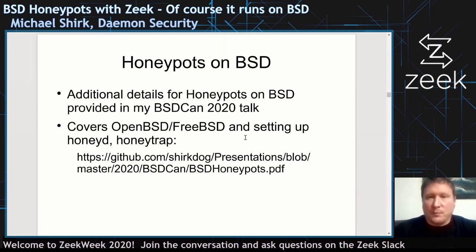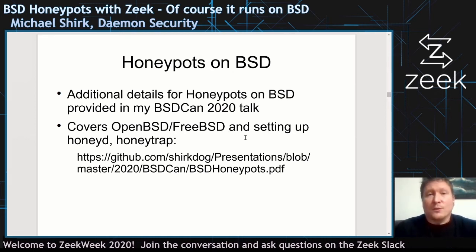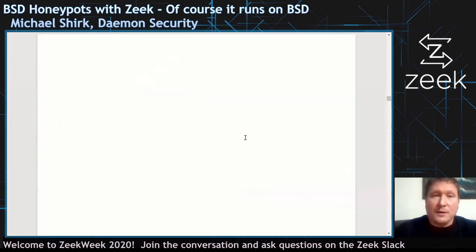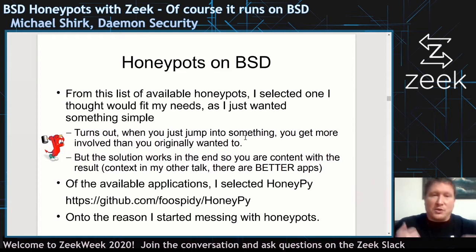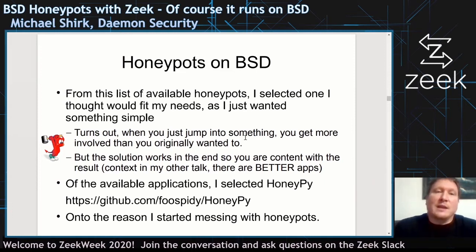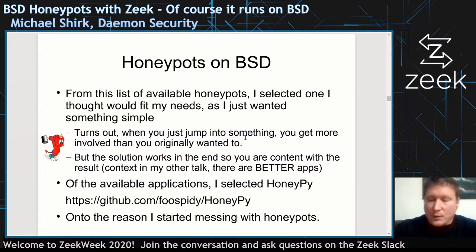I had additional talks for my BSDCan talk, covering HoneyD using with OpenBSD and HoneyTrap, which is a much nicer package that I did not use for my case study, because I selected one from a list. This is not the best all-in-one solution — it's what I did for this proof of concept. I selected HoneyPie, and I'll get into why for this particular case study.